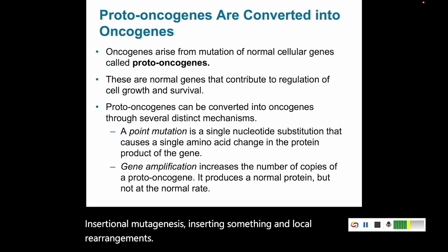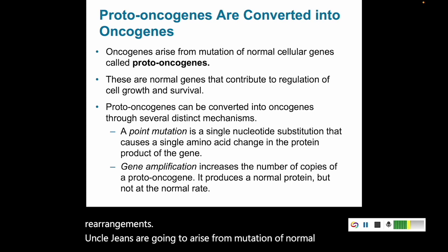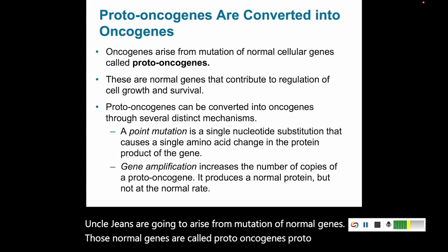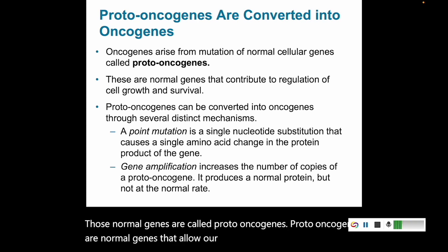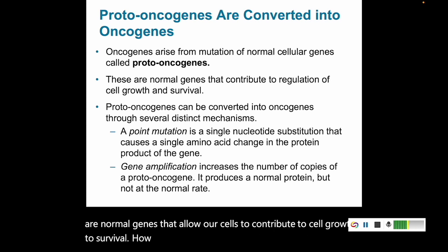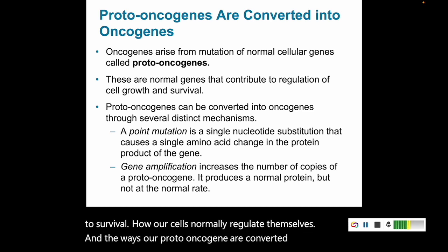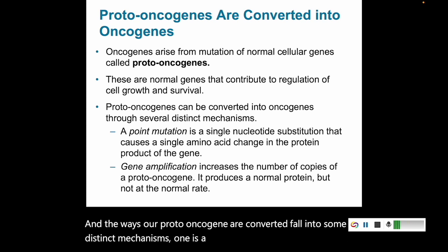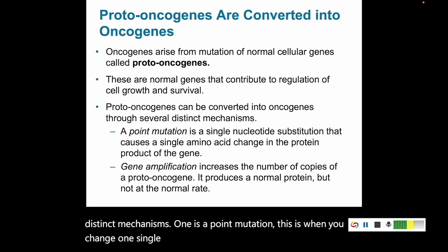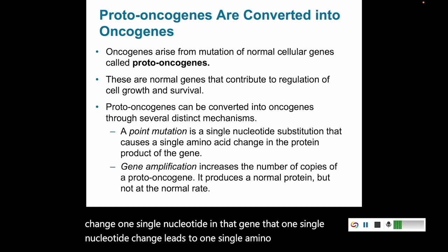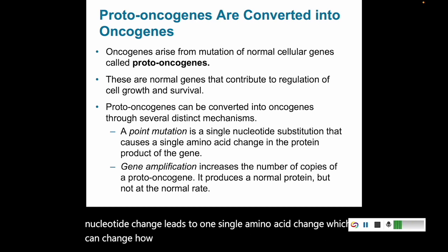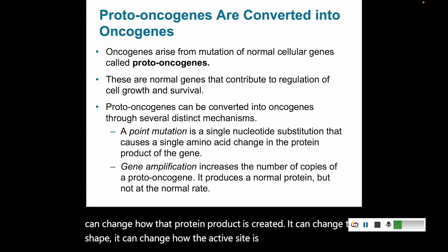Oncogenes arise from mutation of normal genes. Those normal genes are called proto-oncogenes — genes that allow our cells to grow, survive, and normally regulate themselves. The ways proto-oncogenes are converted fall into distinct mechanisms. One is a point mutation, where you change one single nucleotide in a gene. That single nucleotide change leads to one single amino acid change, which can change how that protein product is created — changing the shape or how the active site functions.